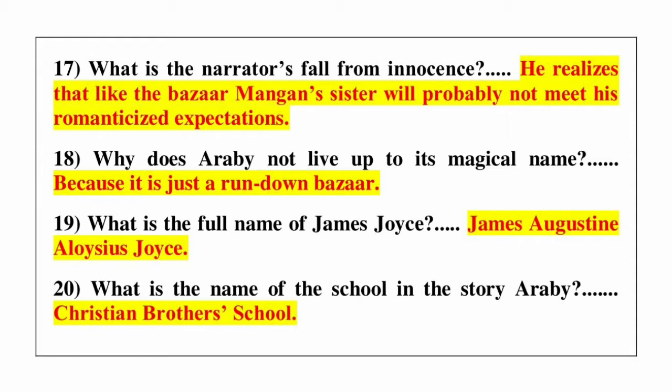Question number 19: what is the full name of James Joyce? Answer is James Augustine Aloysius Joyce. Question number 20: what is the name of the school in the story Arabi? Answer is Christian Brothers School.